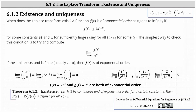Welcome to a lesson on existence and uniqueness of the Laplace transform. When does the Laplace transform exist? A function f of t is of exponential order as t goes to infinity if the absolute value of f of t is less than or equal to m times e to the power of ct, for some constants m and c, for a sufficiently large t — say for all t greater than t sub zero, for some t sub zero.